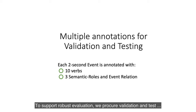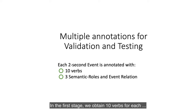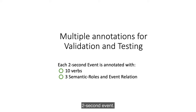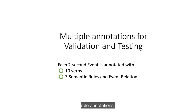To support robust evaluation, we procure validation and test sets in two stages. In the first stage, we obtain 10 verbs for each 2-second event. Then the most frequent set of verb senses are further supported with 3 semantic role annotations and event relations.